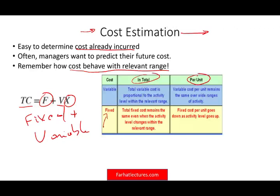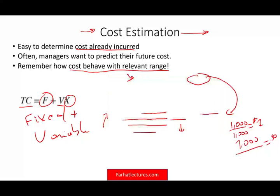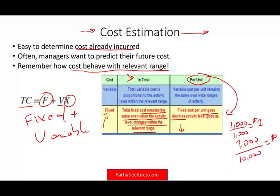Let's start with fixed cost. Fixed costs remain the same even when the activity level changes within the relevant range — fixed cost in total stays the same. However, fixed cost per unit decreases as the activity level goes up. For example, if you spend $1,000 on rent and produce 1,000 units, your fixed cost per unit is $1.00. If you produce 2,000 units, it becomes $0.50. At 10,000 units, it drops to $0.10 per unit.